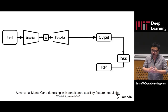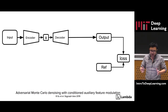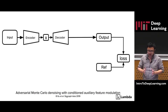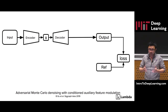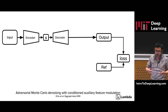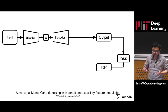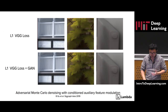The whole network is trained end-to-end as an autoencoder with two losses. The first loss is the L1 loss of the VGG features of the output image. The second loss is the GAN loss, which is trying to retain fine details in the output image.